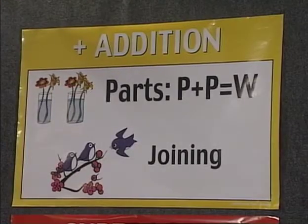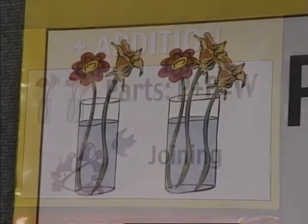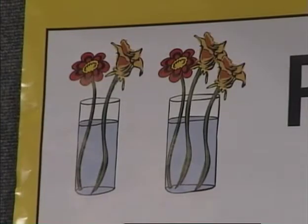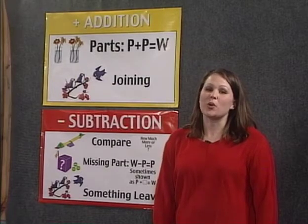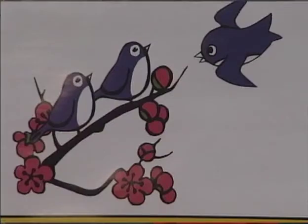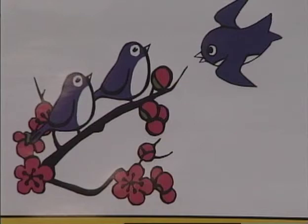The addition poster shows addition without an action: you have two flowers in a vase and three flowers in a vase — how many flowers do you have in all? And in addition with the joining action, you have two birds in a tree and one more lands in the tree. How many birds are in the tree now?